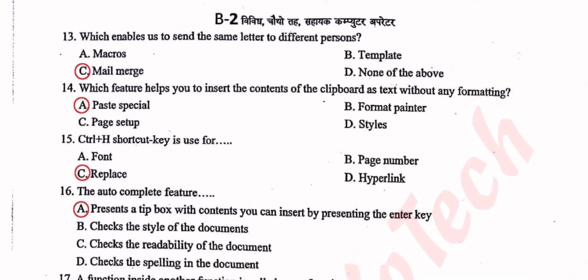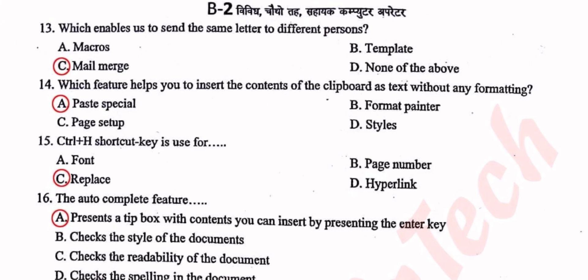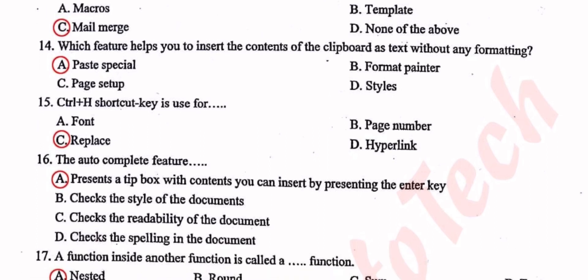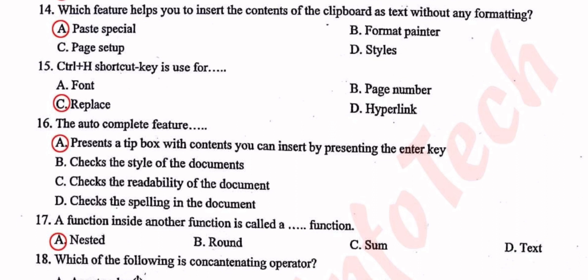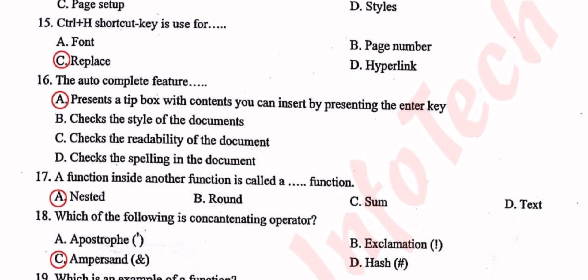Now we have another question. Which feature enables us to send the same letter to different persons? Mail Merge. Which feature helps you to insert the content of the clipboard as text without any formatting? Ctrl+H. The AutoComplete feature presents a tip box with content.